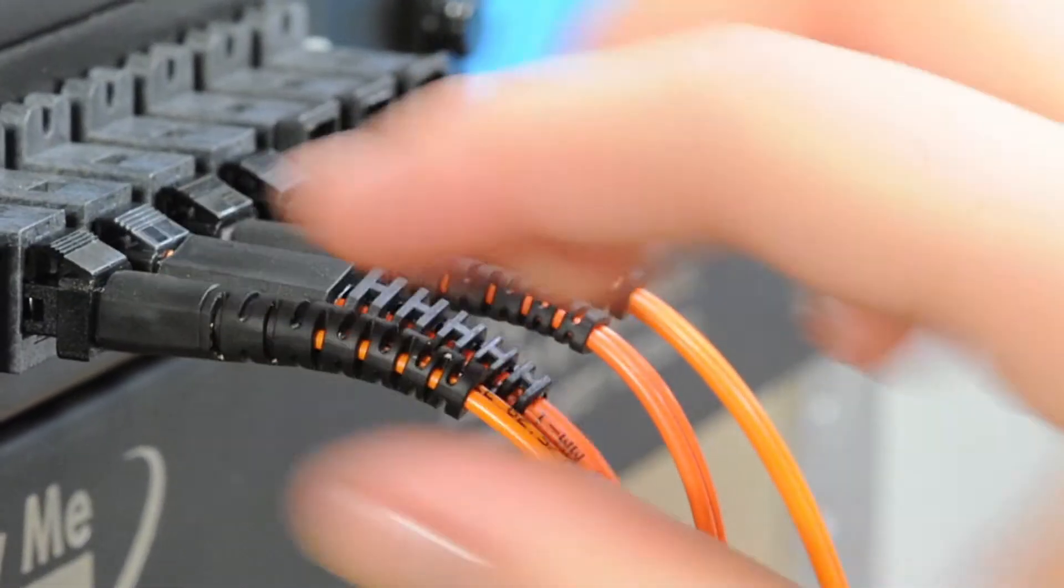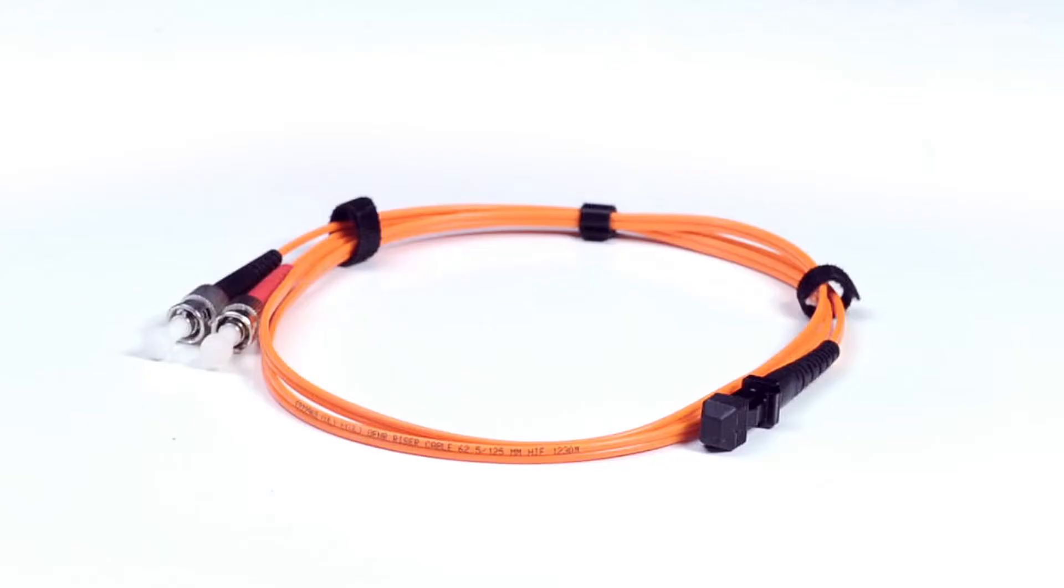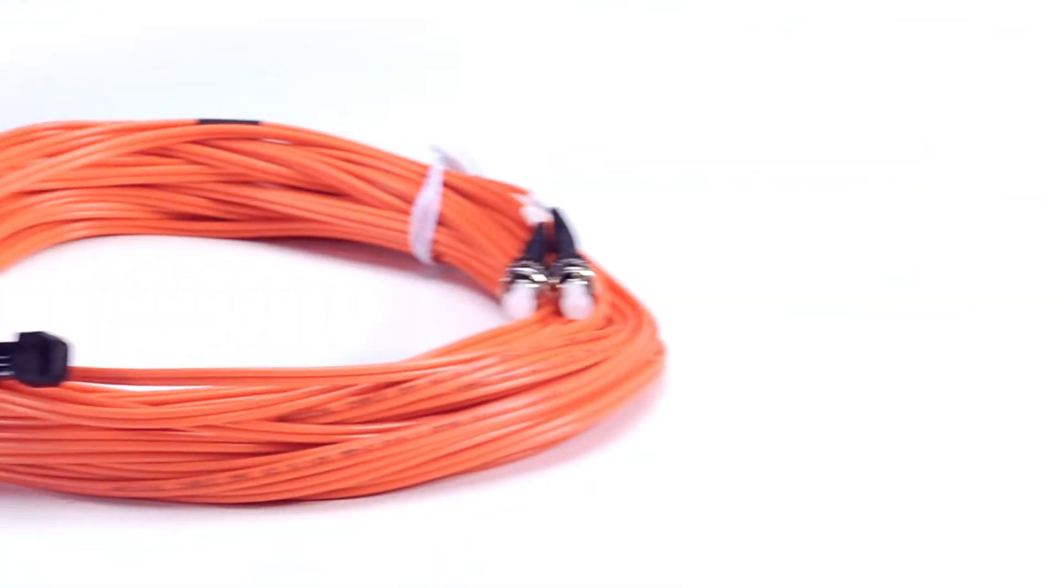An MTRJ connector uses a small form factor with a square plastic casing while an ST connector uses a push and turn locking system. It is available in lengths from 1 to 15 meters.